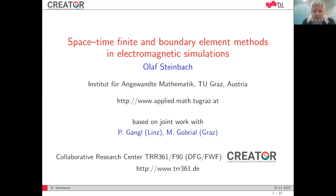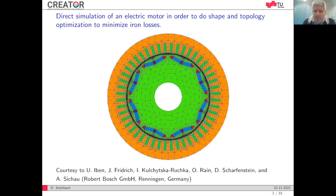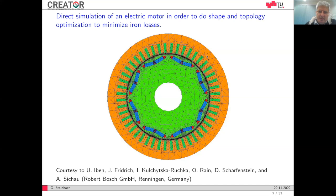The task is the direct simulation of an electric motor as a 2D model. The basic idea is to ultimately perform shape and topology optimization of the motor to minimize, for example, iron losses. The motor consists of a stator which is fixed in time, a rotor with some magnets which is rotating, the coils, and a thin air gap between them. This work is done in joint cooperation with a group from Bosch in Renningen, Germany. The idea is to apply space-time finite and later boundary element methods to solve this in the space-time domain.